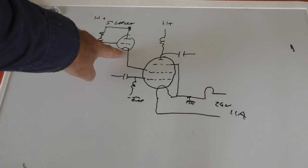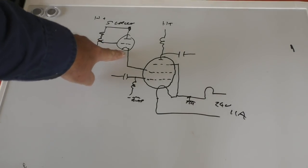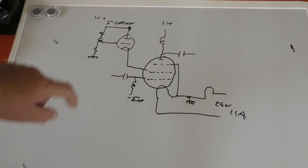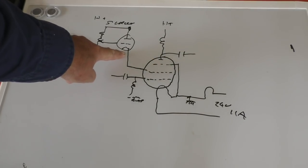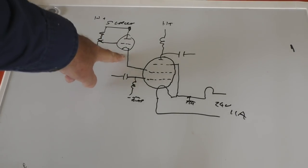So whatever the anode dissipation of this valve is, it's going to have to be greater than 80 watts. You know, 100 watts would be good, 125 watts maybe. A triode connected 813 could go in there.